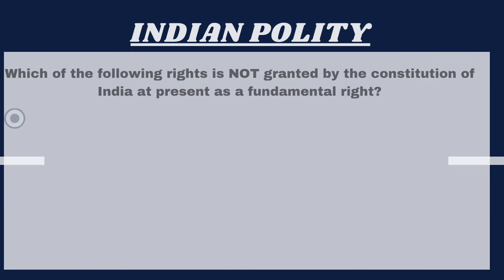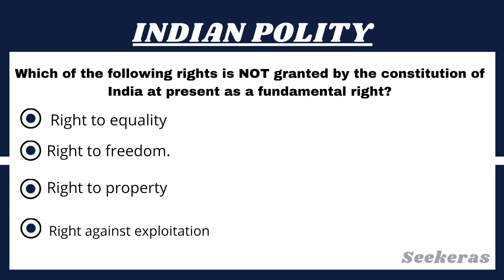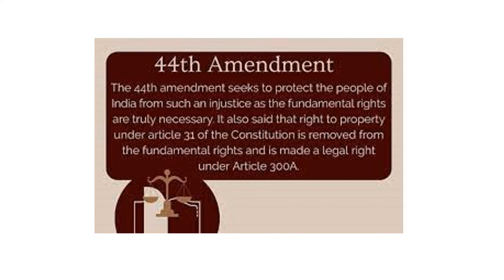Question number 13. Which of the following rights is not granted by the Constitution of India at present as a fundamental right? Option 1, Right to equality; Option 2, Right to freedom; Option 3, Right to property; or Option 4, Right against exploitation. The answer is Option 3, Right to property. The right to property is not a fundamental right, but it is a constitutional right. In the original Constitution, the right to property was listed as a fundamental right, but by the 44th Amendment, it was removed and a new provision, Article 300A, made it a constitutional right.